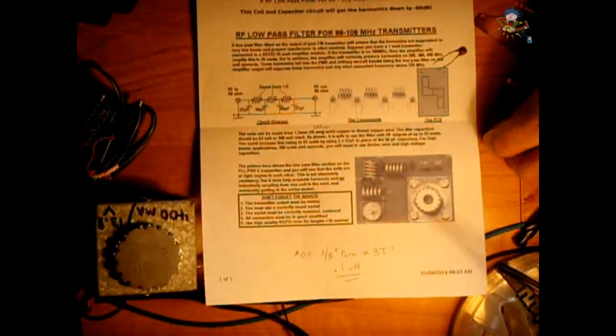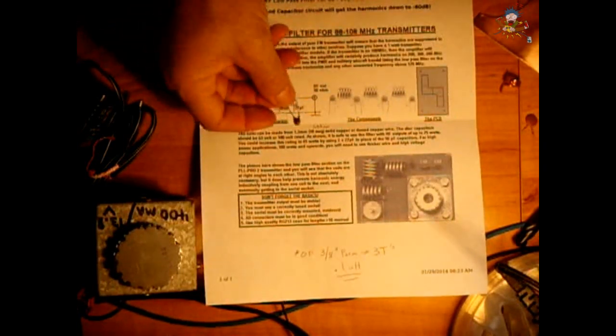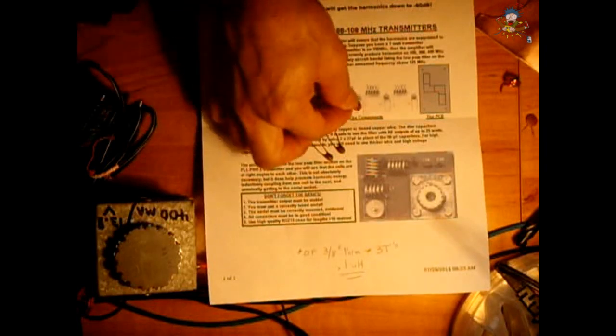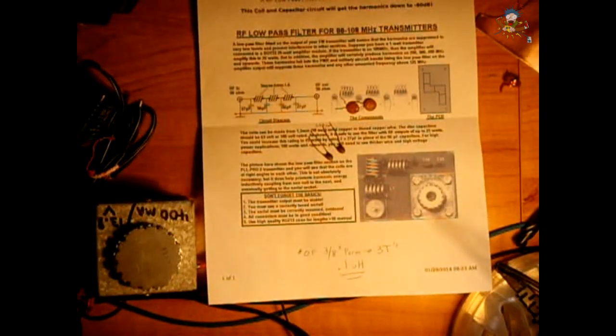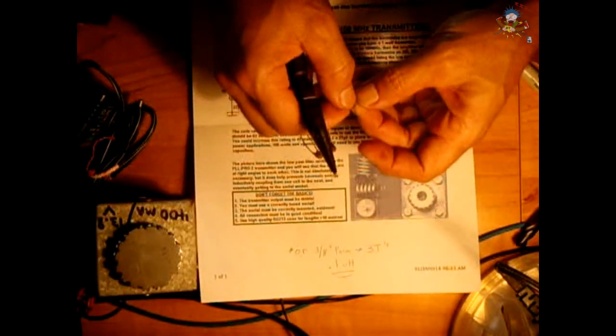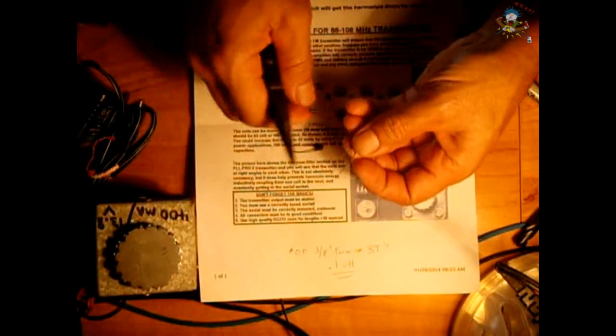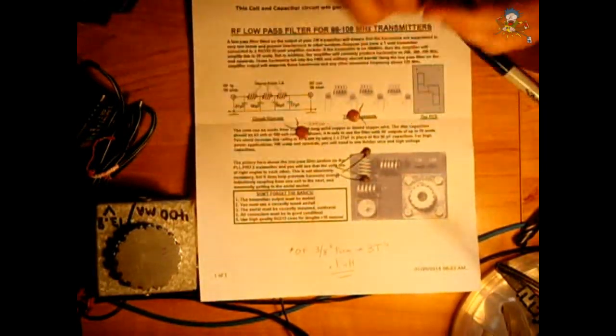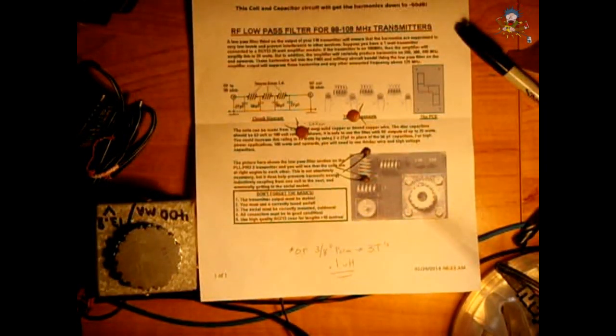Now the capacitors are nothing special. These are the 27 picofarads and these are the 56's. You want to make all your connections as short as possible when you solder everything. So all these, now the legs will be cut off very short. So that's pretty much all you need to make this low pass filter.